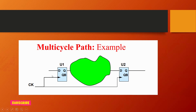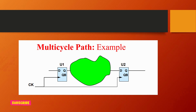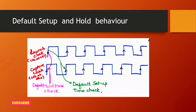It is not possible for the capture flop to capture data in one clock cycle because of the combinational delay, so this path will fail if no multi-cycle path constraint is provided. We tell the tool that this path is exceptional — not a normal path — and give it flexibility so the capture flop can capture data at a particular number of clock cycles. If it still fails, then there is a setup or hold time violation.